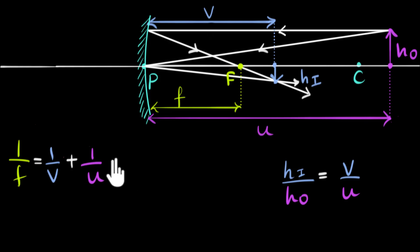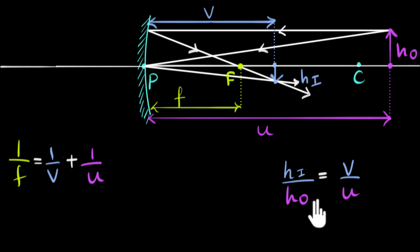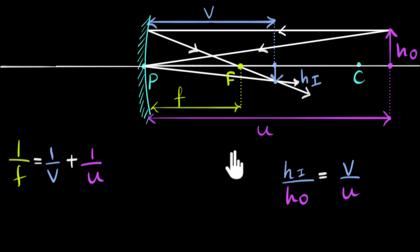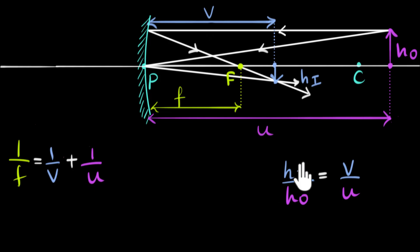In a previous video, we derived the expression for calculating the image distance and the image height. The only problem with this formula is it may not work for all cases, because we derived it for a concave mirror for a real image. It may not work for a virtual image or a convex mirror. In this video, we'll use a trick and convert these specific formulae, which work for a specific case, into a general formula.